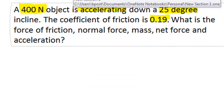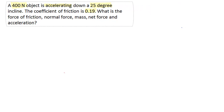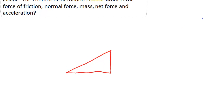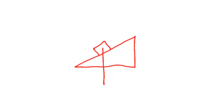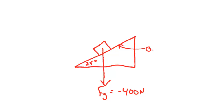Let's begin by drawing our free body diagram on the inclined plane. This is going to be my inclined plane, and I'm going to draw my massive object on it. It's accelerating down the inclined plane. The force of gravity is 400 Newtons — we're going to make that negative 400 Newtons. We have an angle of incline of 25 degrees, and the coefficient of friction of the surface is 0.19.